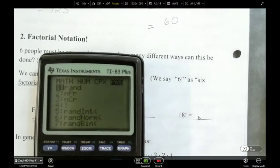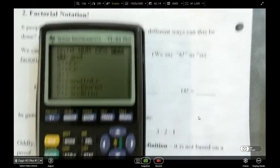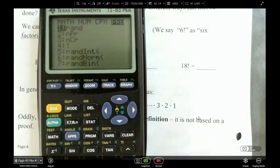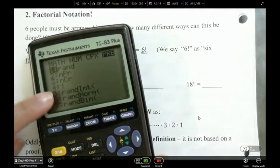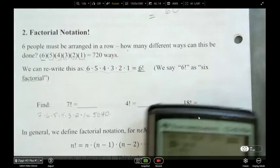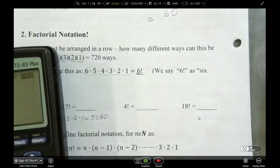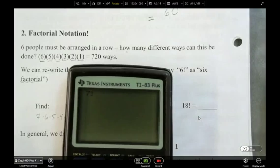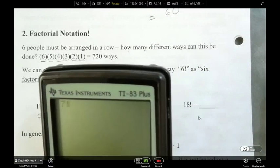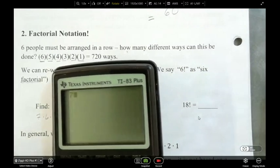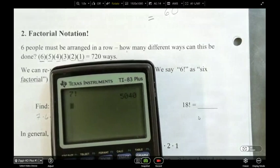Some of you might have to press the shift button to find it on your calculator. There's our exclamation mark, our factorial, and the way I use it is I put the number in front of it that I want, so I have to go 7 factorial, and then I hit enter, and I get 5040.